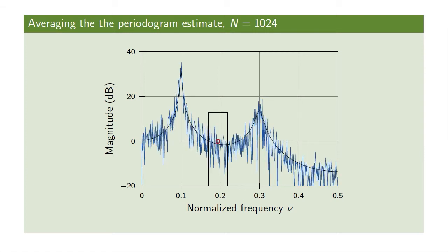If we look at this concept and introduce the concept of a window in the frequency domain — a set of frequencies which we could average over — we see that at the midpoint of these, which corresponds to the average of all these frequencies, we get an average which is closer to the true power spectral density, simply because some of the values are above and some are below.